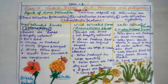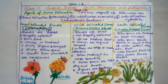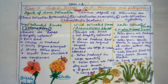In wind-pollinated flowers, pollen is produced in very large quantities. The pollen grains are light, dry, and smooth so they can be easily carried away by wind. The stigmas are feathery and hang out of the flower to trap the pollen grains — like a brush that catches passing pollen. Large quantities of pollen are produced because most of it gets wasted during wind dispersal.